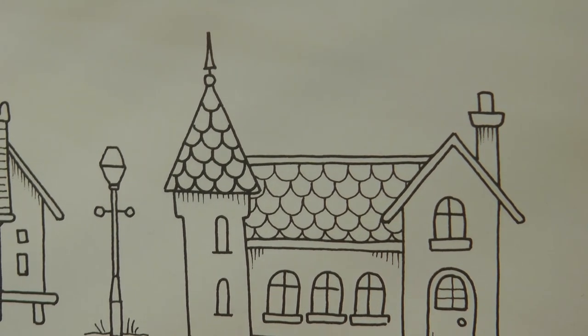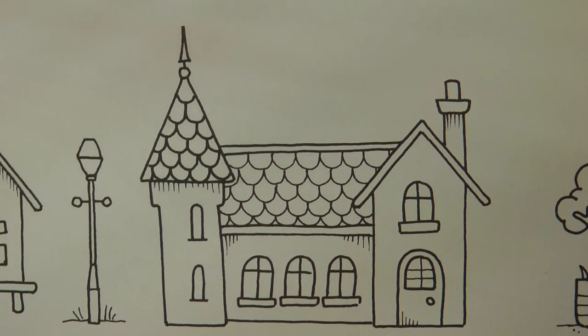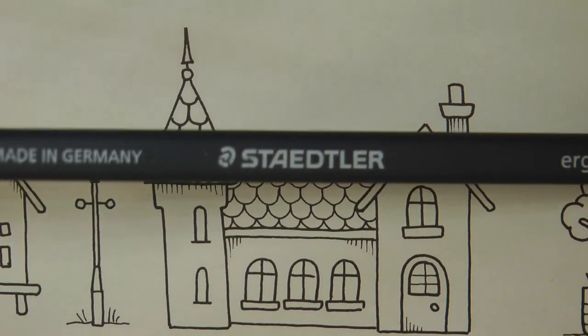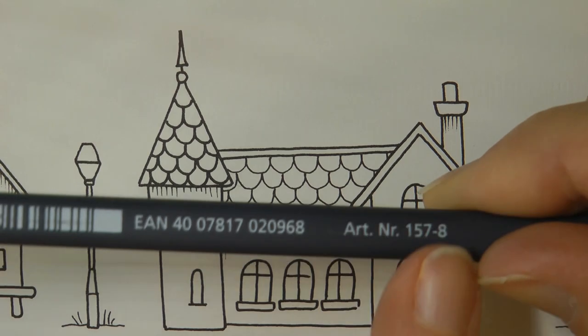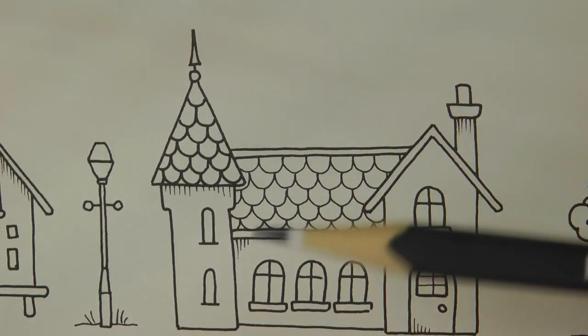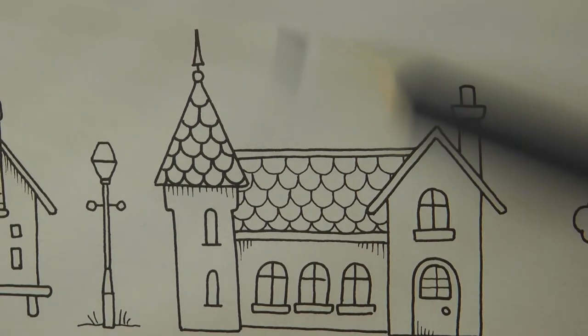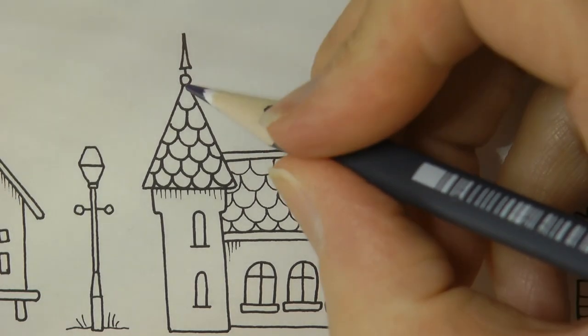Now I'm using my Staedtler Ergosoft pencils today. Sorry the page keeps moving, it's being a bit annoying. So this is the dark grey color. They obviously only have these numbers. You can use the lighter grey or black if you haven't got this set.